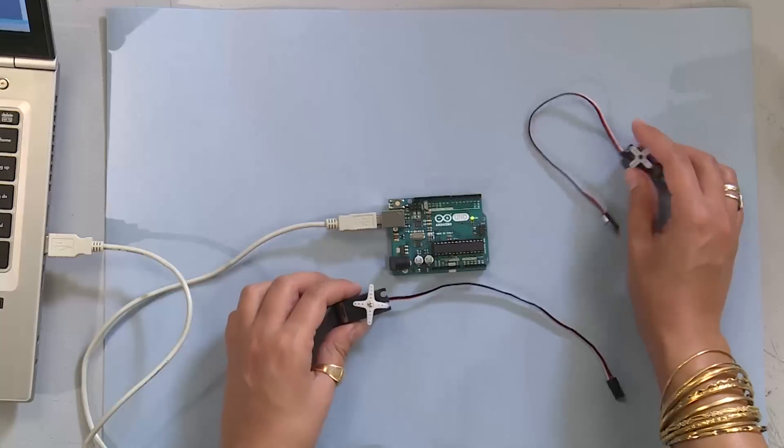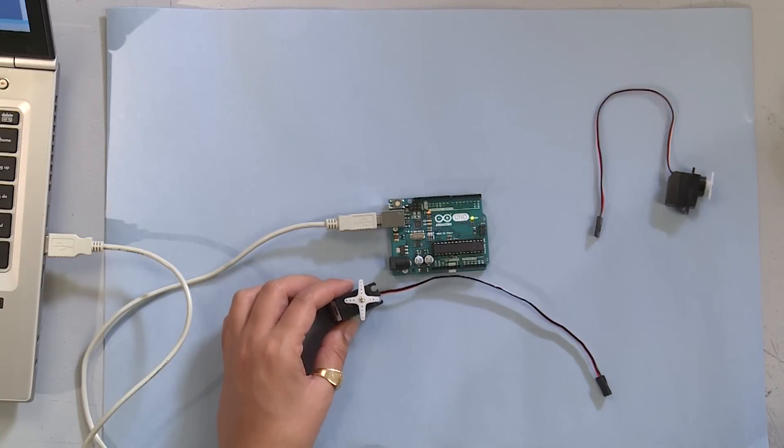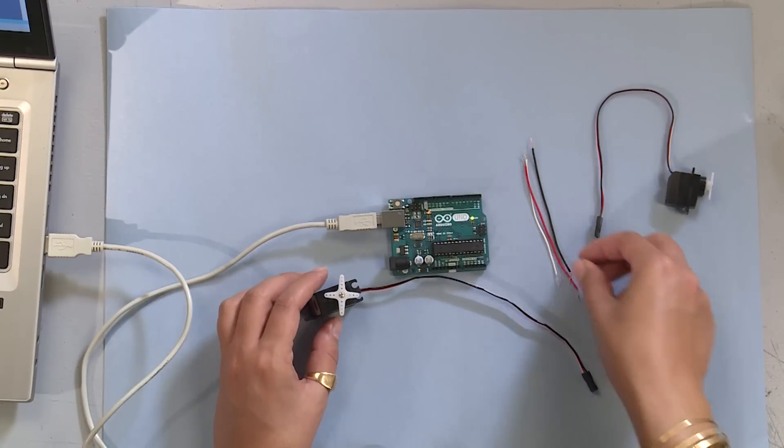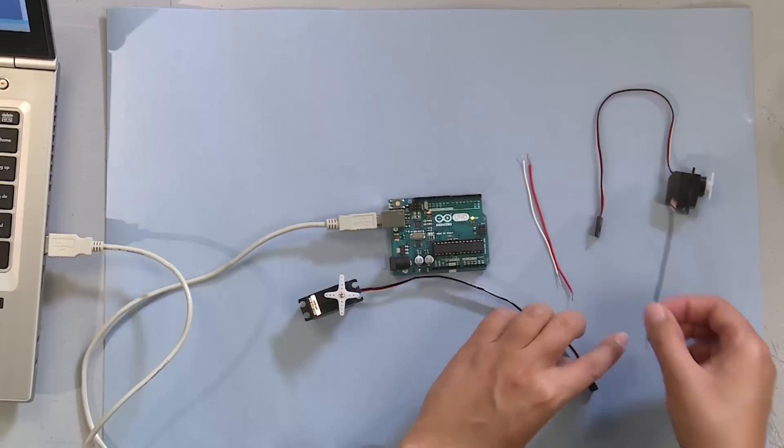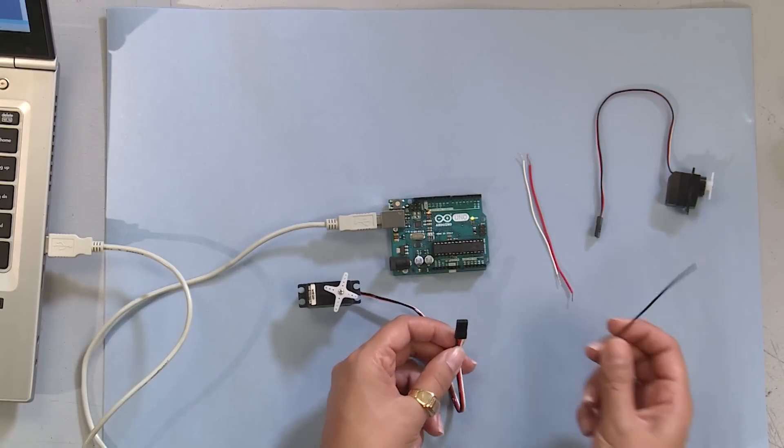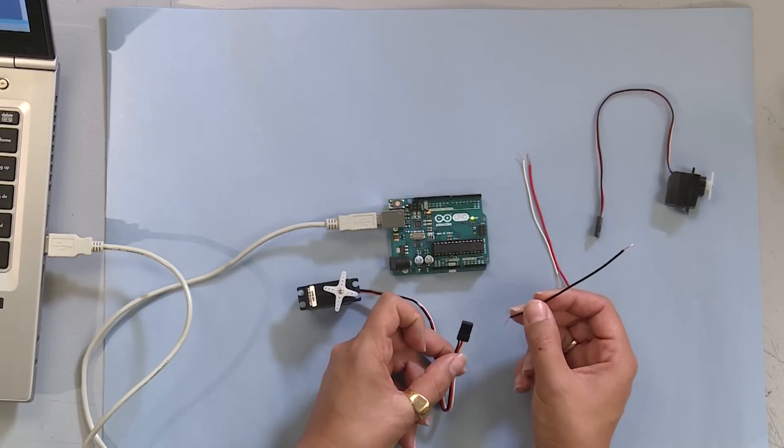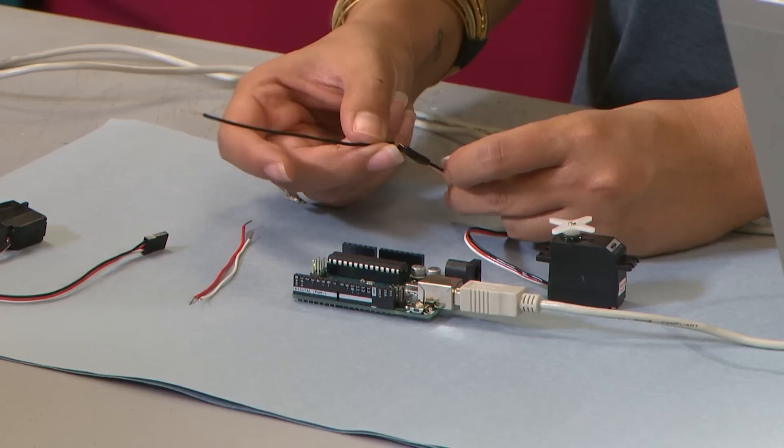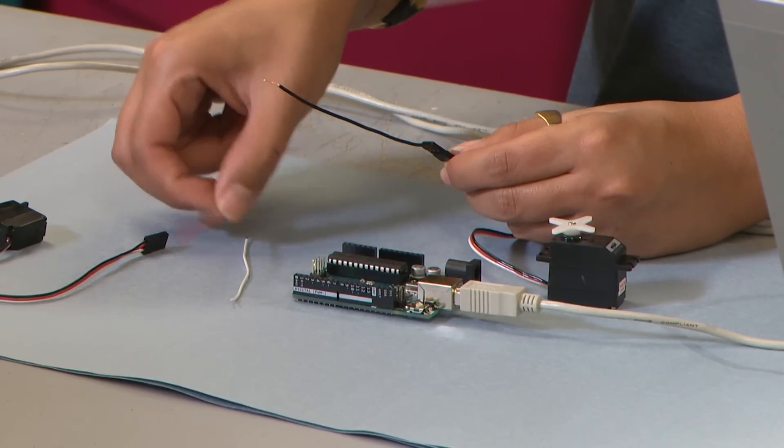We're going to start with the big servo. Take your red, black, and white wire. Go ahead and make sure they're color-coded. The reason we like to color-code wires is it makes it easier and less likely to make mistakes. Put black wire to black, red to red, and white to white.